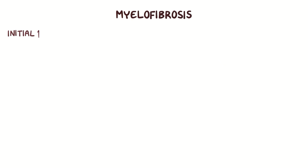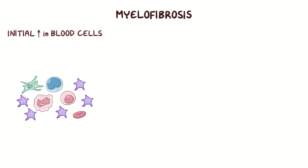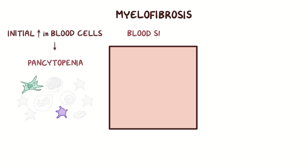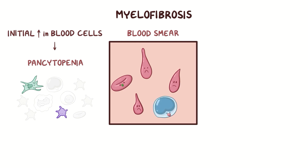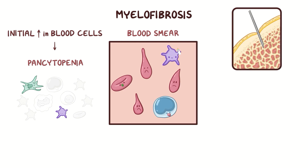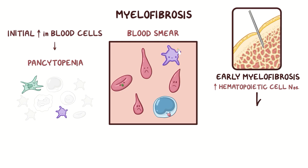In myelofibrosis, there's typically an initial increase in blood cells, particularly platelets, but eventually those levels drop as there's pancytopenia. A blood smear will show abnormal tear-drop shaped red blood cells, immature nucleated red blood cells, and immature white blood cells and platelets. A bone marrow biopsy can show an increase in hematopoietic cell numbers in early myelofibrosis, or a decrease in hematopoietic cell numbers and fibrosis later in the process.